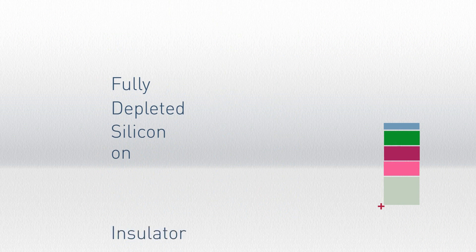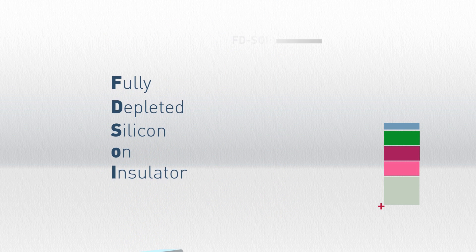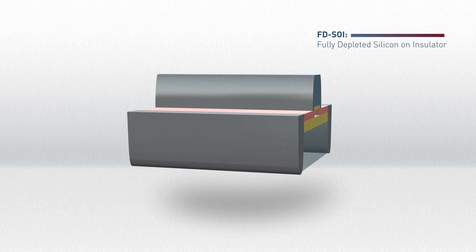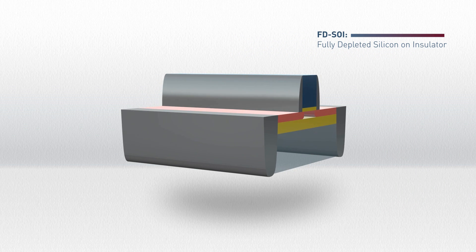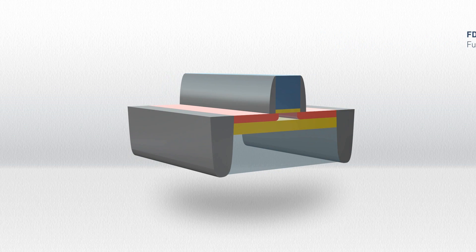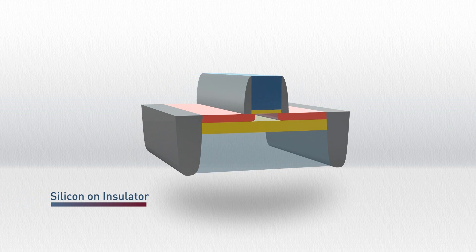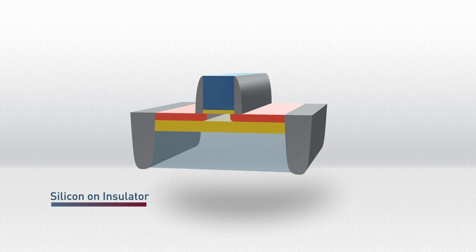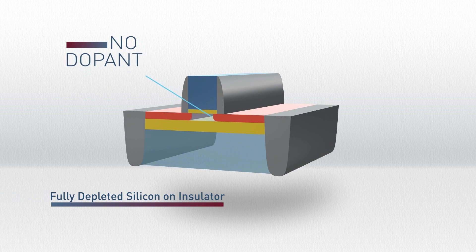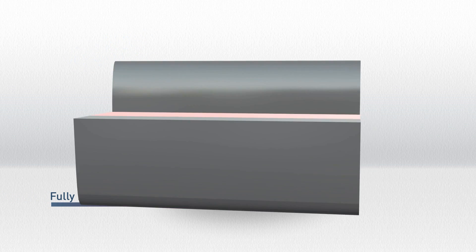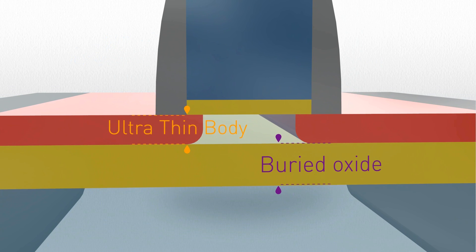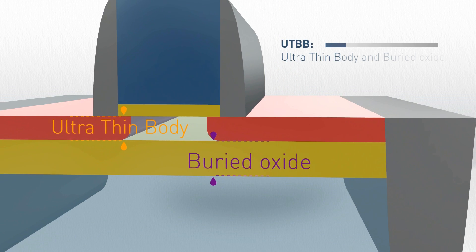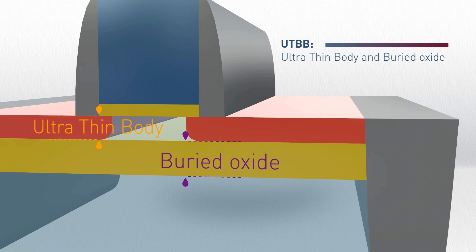Fully depleted silicon on insulator, or FDSOI, is an approach that delivers these benefits while enabling a simplification of the manufacturing process. Unlike some other technologies, FDSOI does not change the fundamental geometry of the transistor. The innovation lies in adding a thin layer of insulator called the buried oxide, positioned just below the channel, and eliminating the need to add dopants to the channel, thus making it fully depleted. Another key innovative step is that the silicon on oxide layer is very thin. Together with the thin body channel layer, this technology is called ultra-thin body and buried oxide, or UTBB.